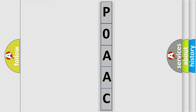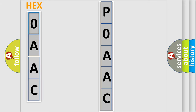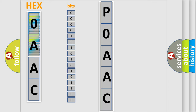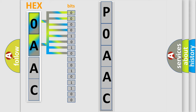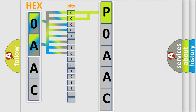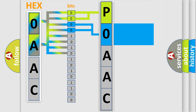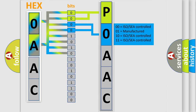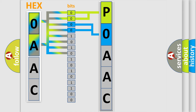The error code is split into two bytes consisting of 16 bits. One bit is the basic unit that each computer works with. The bit has two logical states: zero, which is low level, and one, which is high level. By combining the first two bits, the basic character of the error code is expressed. The next two bits determine the second character, and the last four bits of the first byte define the third character of the code.